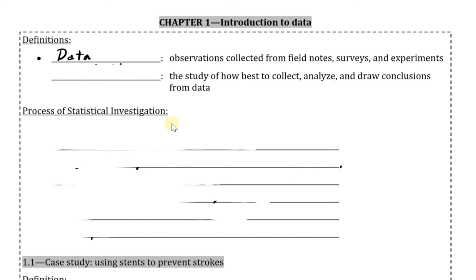The science of using and applying this data is known as statistics, defined specifically as a study of how best to collect, analyze, and draw conclusions from data, otherwise known as making inferences. Note that analyzing, which is typically where calculations will lie, is only a part of statistics, and a majority of it actually has to do with the methodology of how to gather and how to infer.